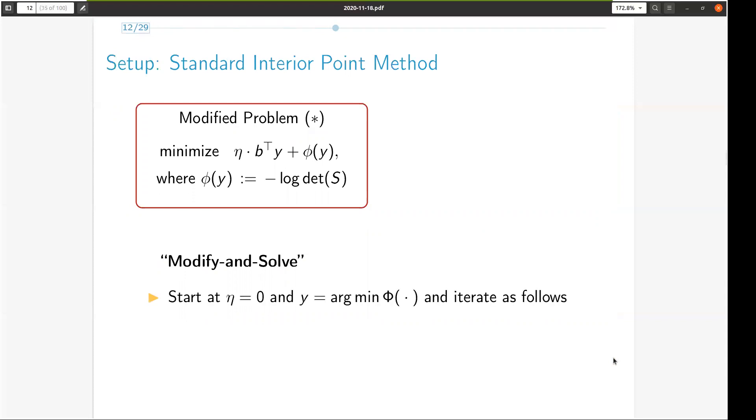We start at eta equal to 0 and y being the minimizer of the barrier function. We update eta and use Newton method to solve the resulting optimization problem. The update on eta is such that we make sufficient progress but don't stray too far from the current optimum so that the Newton method converges in each iteration.